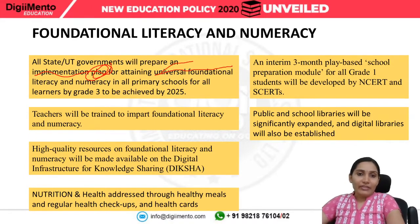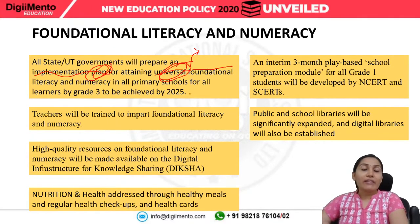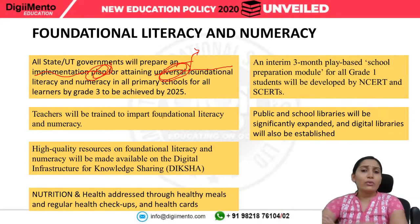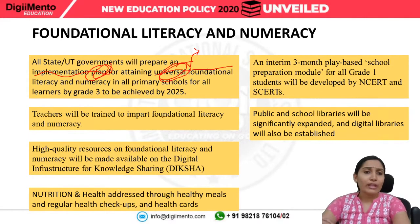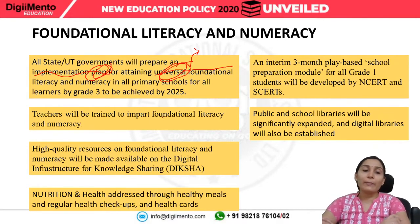We have discussed the concept of universal earlier. Universal means available for everyone. So for attaining this universal foundational literacy and numeracy, the governments at the state level and the union territory level will prepare an implementation plan.